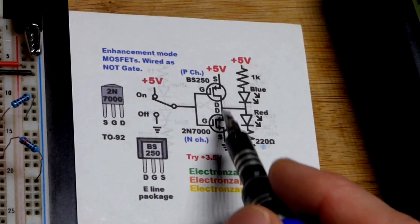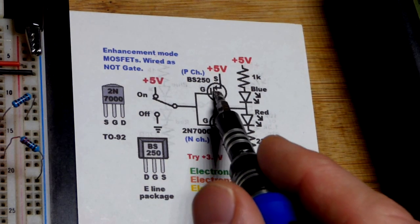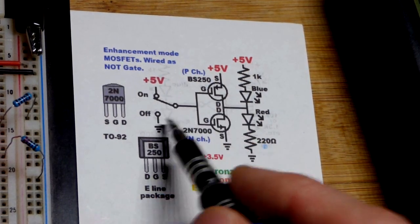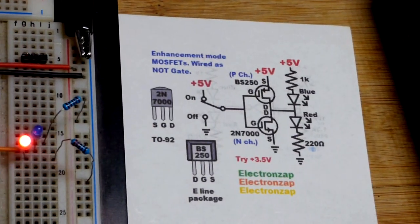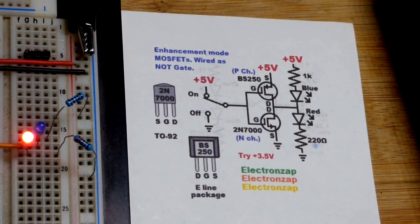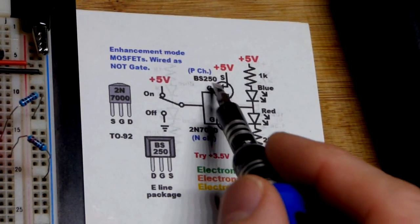We move the switch down to the negative, and then the P-channel enhancement mode MOSFET will get negative, it will turn on, and the N-channel will turn off. It's that simple.